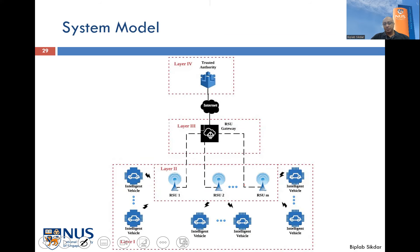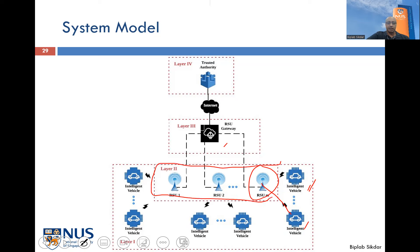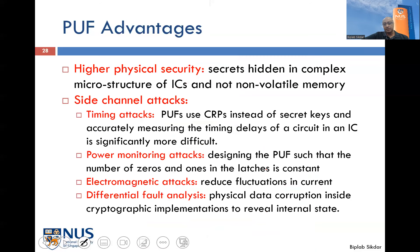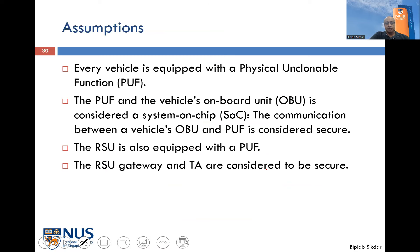Now let's come to our privacy-preserving authentication protocol. In our system model, vehicles connect through their nearest roadside unit — that's layer one. A number of roadside units form layer two, and these connect to a roadside unit gateway, which is ultimately connected to a trusted authority. Each vehicle and each RSU is equipped with a physically unclonable function. The RSU and vehicles are out in the open and are not physically secure, but the RSU gateway and the trusted authority are considered to be secure.